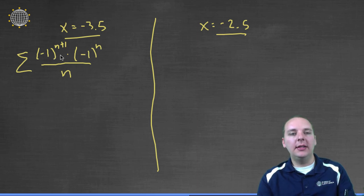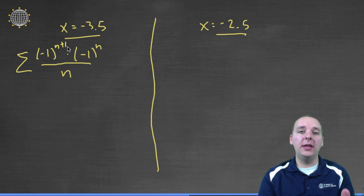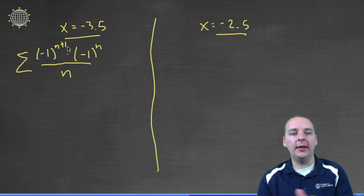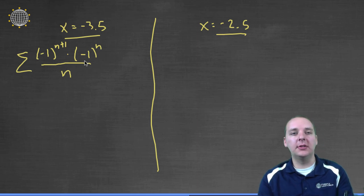Now these two here, if you have negative 1 to 1 power, and then negative 1 to another power, but the powers are off by 1, 1 power will be even and 1 power will be odd. And so that means one of these will be negative 1, and one of these will be positive 1. It doesn't really matter which one, negative 1 times positive 1 is simply negative 1.